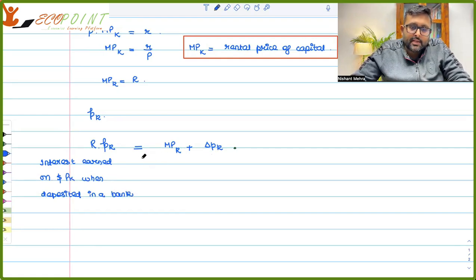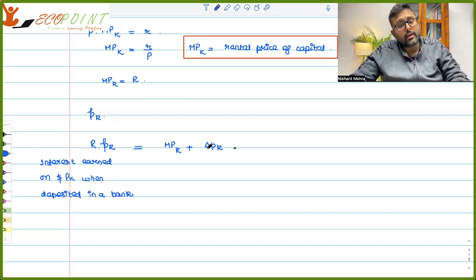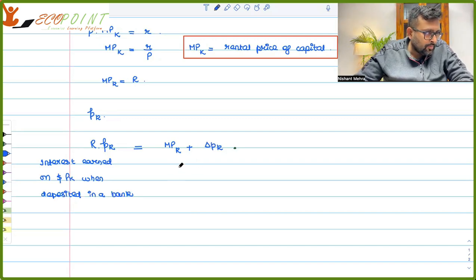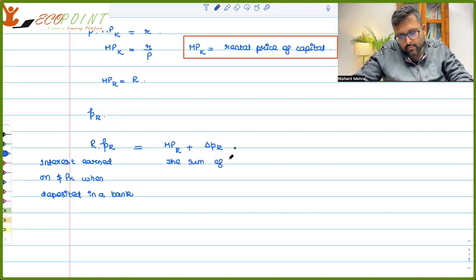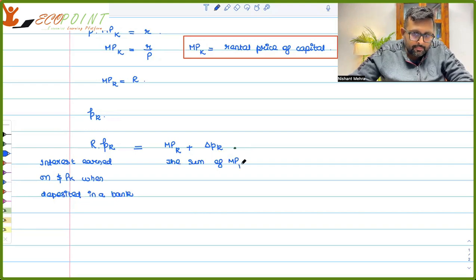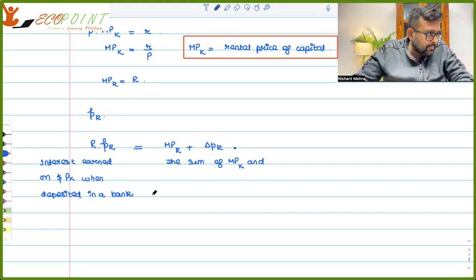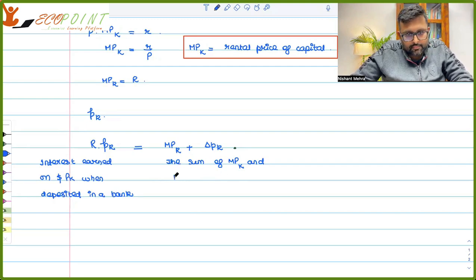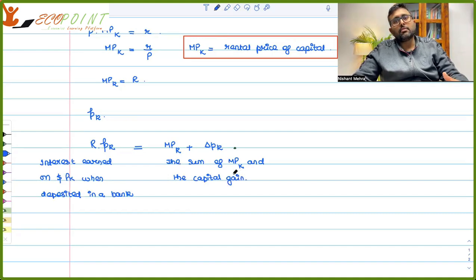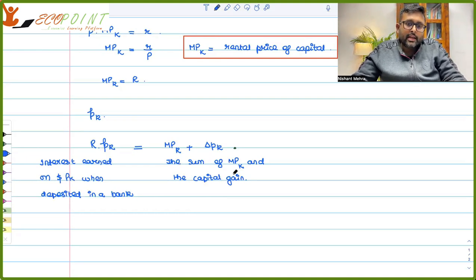And this MPK plus delta PK is that amount - first of all you're getting the marginal product, and plus in case if you're going to sell this at a higher cost, that is a capital gain also. There can also be a capital loss. So this is sum of marginal product of capital and capital gain. I'm writing here capital gain, but it can be capital loss also. If you bought it for less today and sold it for more, that's capital gain. But if you bought it today and sold it for even less at the end of the year, that's a capital loss.